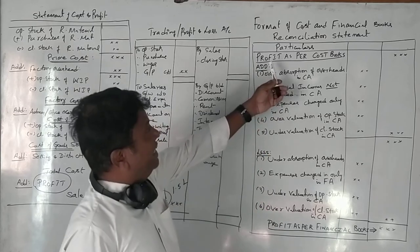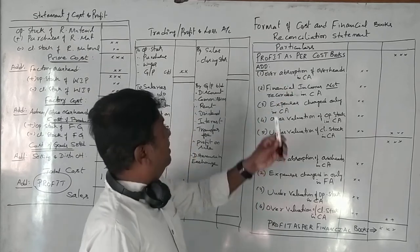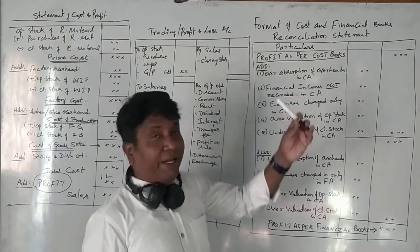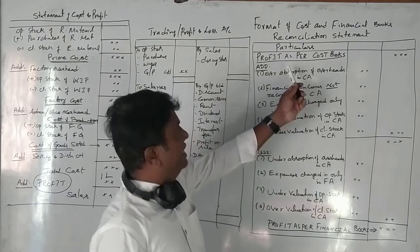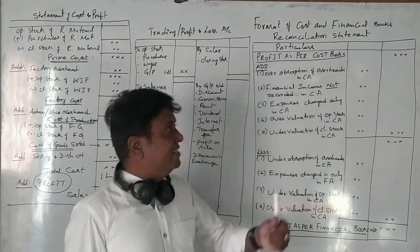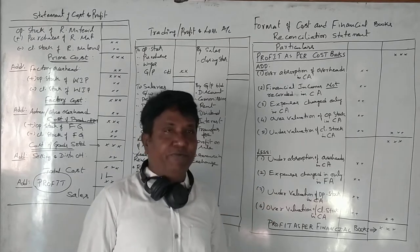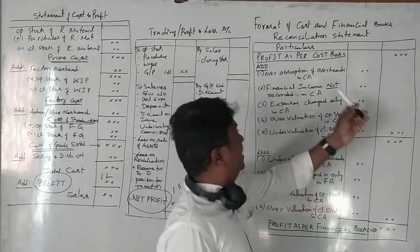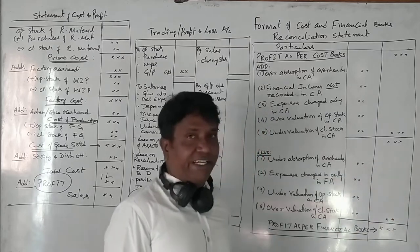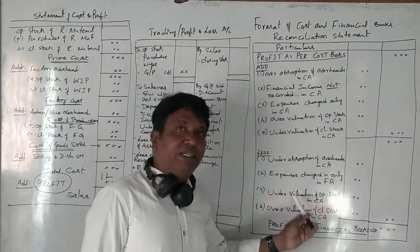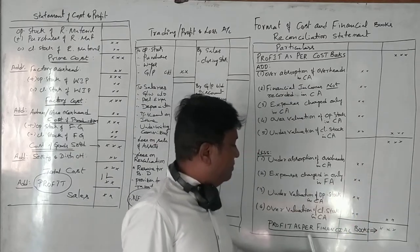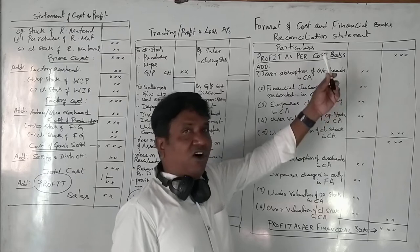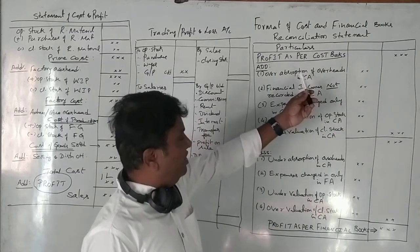According to the reconciliation format, we take the profit as per cost accounting as our base. We then need to add certain items to this profit as per cost books, and from that balance, certain items have to be deducted, so that we arrive at the profit as per financial books. These additions and deductions represent the reasons for the difference.